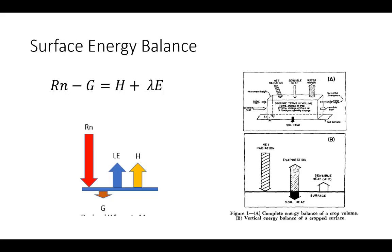This is a quick review of the surface energy balance: Rn minus G equals H plus LE, where Rn is net radiation and G is soil heat flux. Those two represent available energy, which is used to either heat the air as sensible heat H, or evaporate water as latent heat LE. That equation must balance by conservation of energy — as shown in the famous drawing by Dr. Tanner from his 1960 paper.